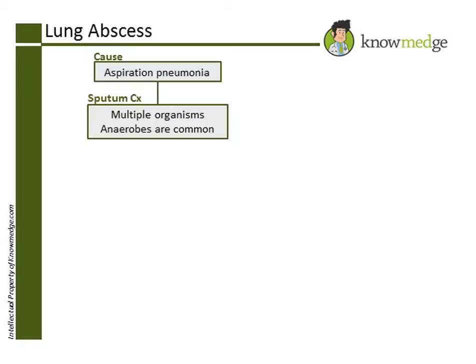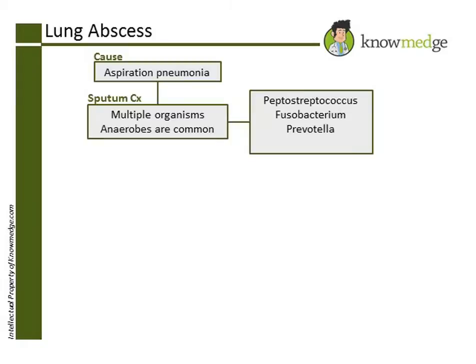Therefore, an antibiotic must be selected to cover oral anaerobes and must also cover those that produce beta-lactamase. Some common anaerobes that cause aspiration pneumonia are Peptostreptococcus, Fusobacterium, Prevotella, and Bacteroides species, such as B. fragilis.